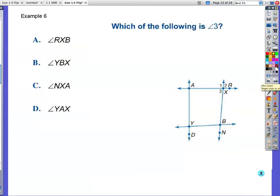Example number six. Which of the following is the same as angle three? All right, so look at angle RXB. Here's R, here's X, here's B. Is that the same as angle three right here? No. Now let's try angle YBX. Here's Y, here's B, here's X. So that's this angle right here. Is that the same as angle three? It is not the same angle. C is angle NXA. So here's N, here's X, here's A. That looks very promising. I think I'm going to go with that one, but I'm just going to double check. YAX. So here's Y, here's A, here's X. That would be this angle right here. So that is not going to be an answer. So I'm going to go with C.